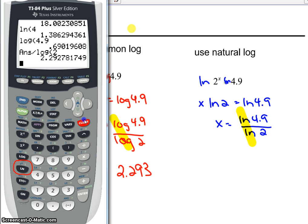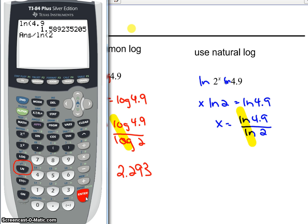Okay. So natural log of 4.9, enter, divide by natural log of 2, I still get the same value.